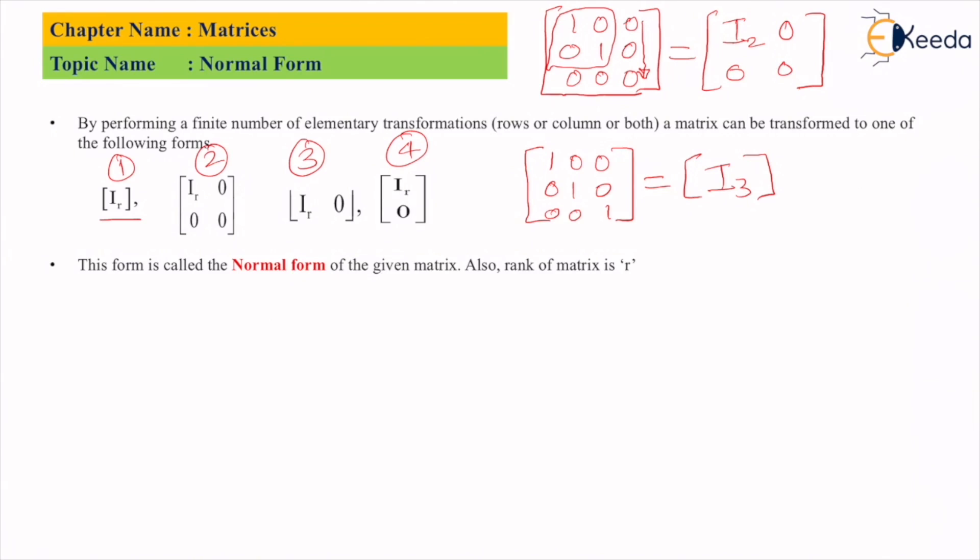Out of which two rows and two columns represent identity matrix of order two. Next we'll get I_r with a zero column. Let's say I have an identity matrix and we have an extra column, that is column number three. Such a matrix can be represented as I_2 and zero.